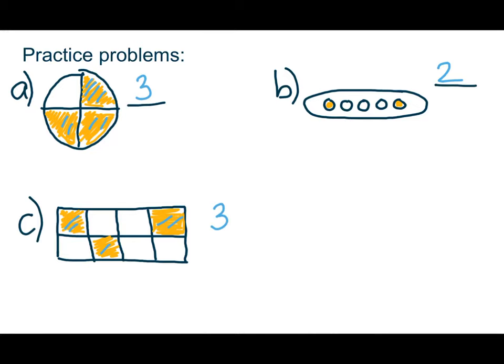So that gives us half of our fraction. And then the denominator is the total number of pieces, equal pieces. This is four. This is five. And this is eight equal pieces.